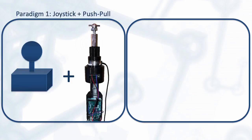In the first paradigm, subjects used a joystick to drive the crane and the push-pull device for fine positioning and orientation adjustments. However, the instrumentation in the push-pull device was disabled for these trials so that it performed as a simple push-pull rod, with no effect on the motion of the crane. This approach is widespread in industrial applications and serves as a good baseline to measure against.